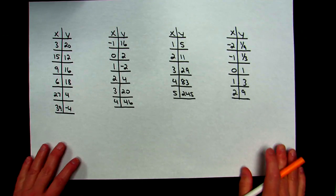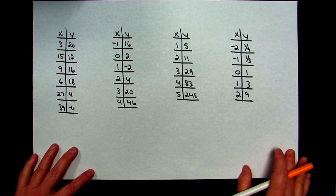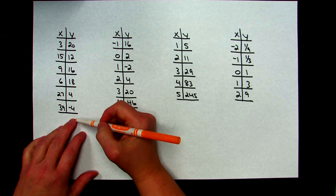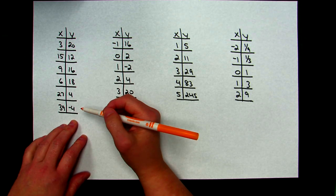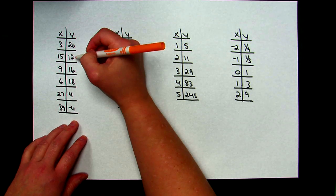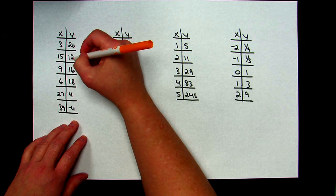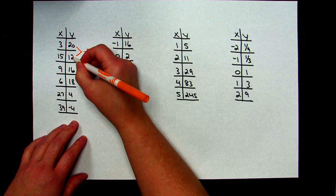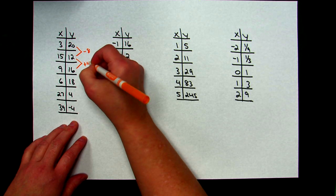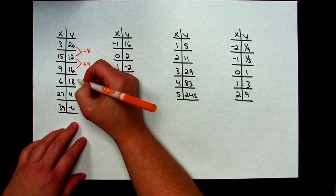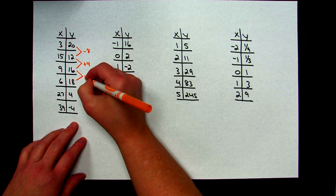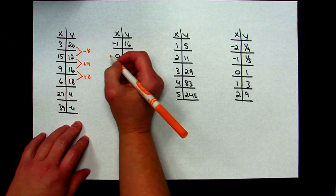Looking at this first table of values, the first thing I do is start looking at my differences. I'm going to look at my y-values: 12 minus 20 gives me negative 8; 16 minus 12 gives me a difference of positive 4; and 18 minus 16 gives me a difference of plus 2. I'm not seeing a common pattern over here on that side.